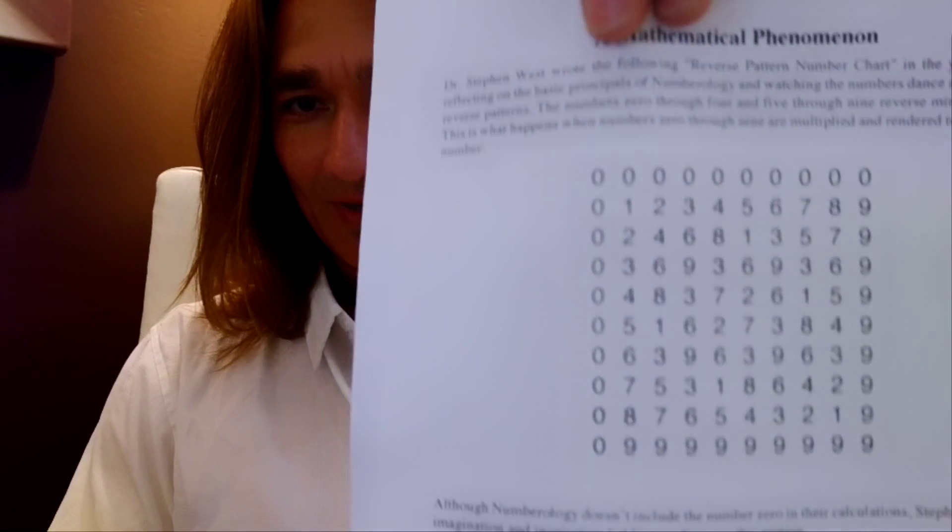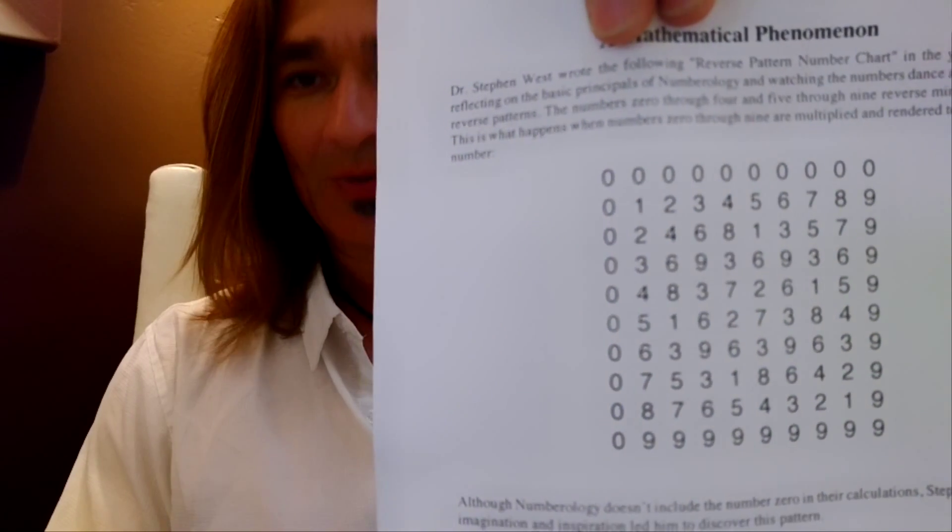But one of the things that I first noticed about this particular chart — let's just go over it. If you look at the numbers on this chart, basic principle of numerology: if you times the number 0 by 0, 1, 2, 3, 4, 5, 6, 7, 8, or 9, it's always the number 0.